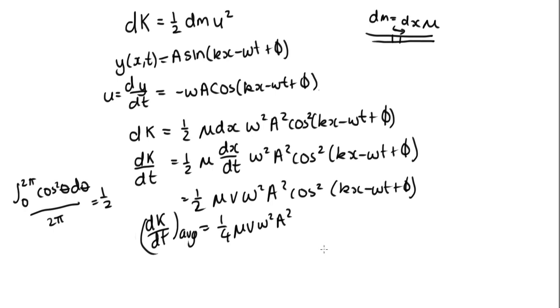these two have the same average value. So P = ⟨dK/dt⟩ + ⟨dU/dt⟩, and since these averages are equal, P = (1/2) μ v ω² A². We've now shown the relationship we set out to prove.